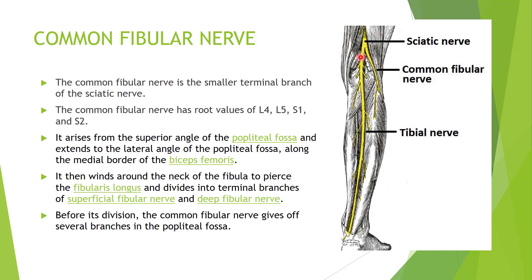The common fibular nerve arises from the superior angle of the popliteal fossa — as seen in this diagram, this is where the common peroneal nerve originates. It extends to the lateral angle of the popliteal fossa along the medial border of the biceps femoris muscle. It then winds around the neck of the fibula to pierce the fibularis longus muscle, also called the peroneus longus muscle.